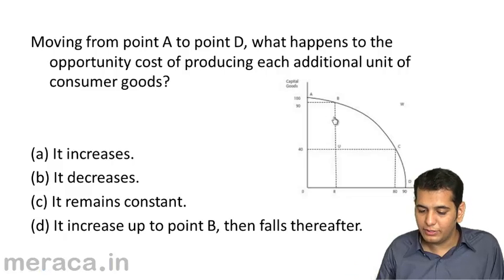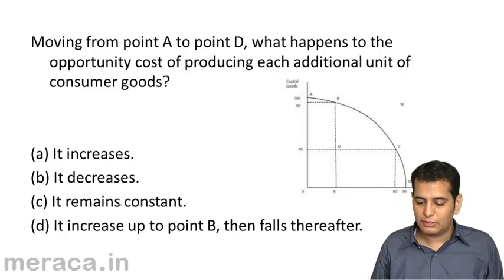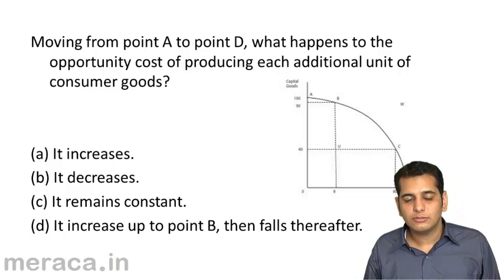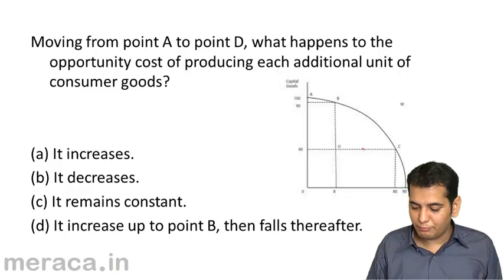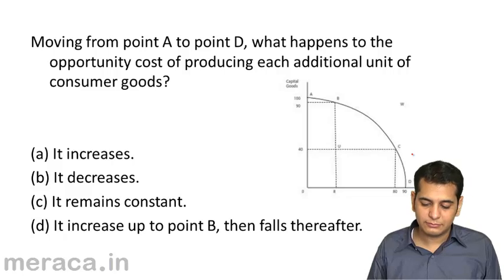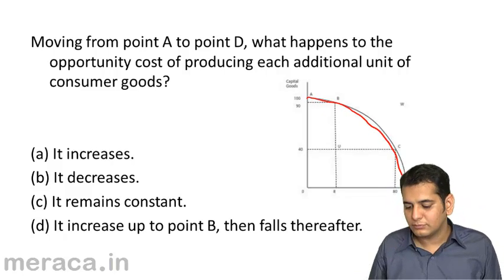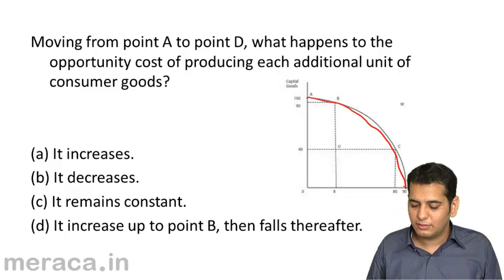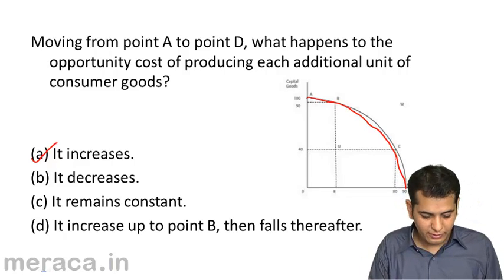Moving from point A to D in the picture, what happens to the opportunity cost of producing each additional unit of consumer goods? Is it increasing, decreasing, constant, or increases up to B then falls? Note the shape of the curve — if it is concave, the opportunity cost will always be increasing. In this case it is a concave curve, so the answer is opportunity cost increases.